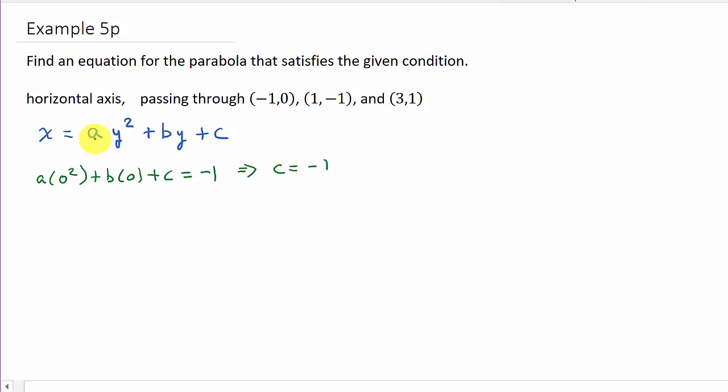Alright, so that's nice, we know what c is now. Well, we've got to figure out what a and b are. Well, let's use the other points. So let's plug this in. So I'm plugging negative 1 in for y. So I get a times negative 1 squared plus b times negative 1 plus c equals x. In this case, x is 1.